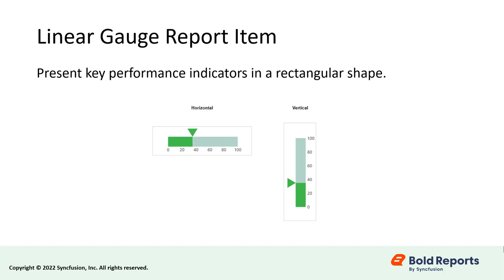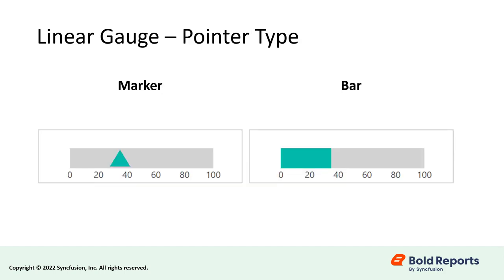Linear gauges represent key performance indicators in a rectangular shape. In Bold Reports, we have provided a linear gauge with horizontal, vertical, and auto orientations. The auto type customizes the orientation based on the height and width of the gauge. The linear gauge has two pointer types: marker and bar.